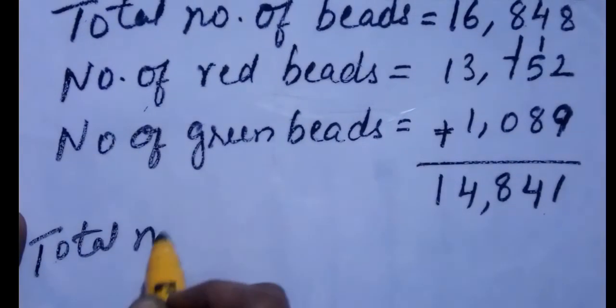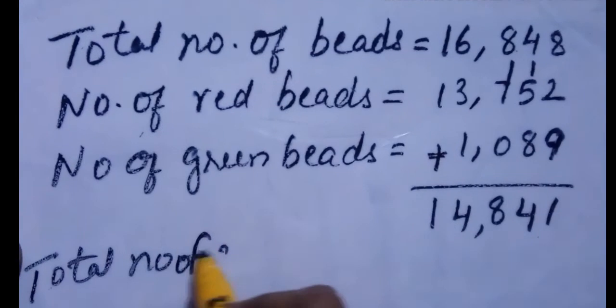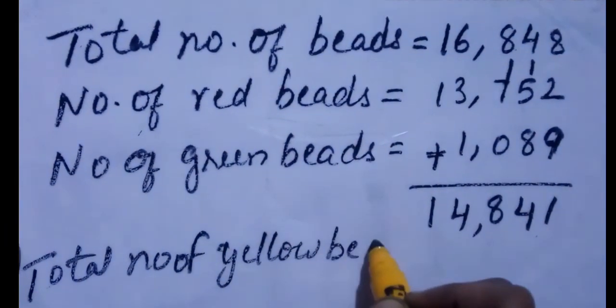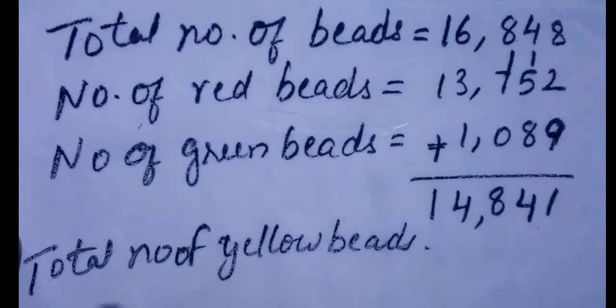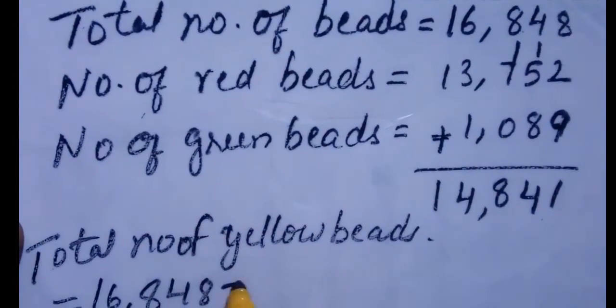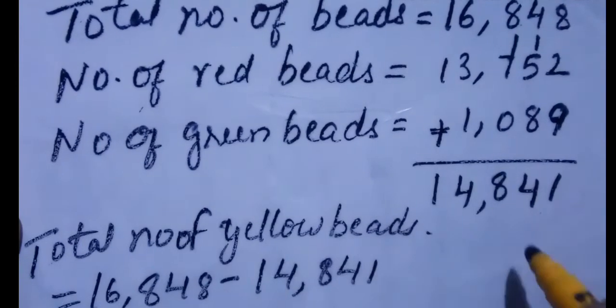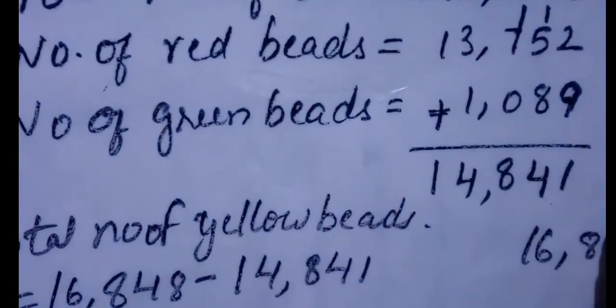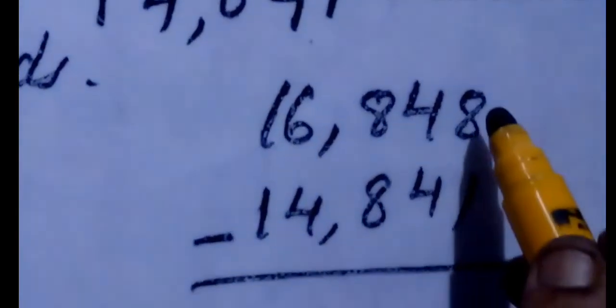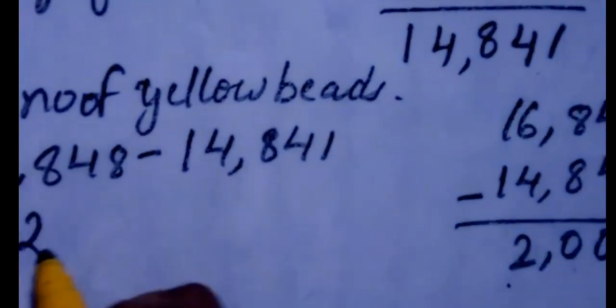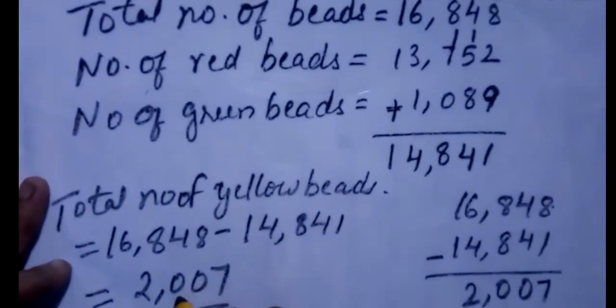Total number of yellow beads is equal to 16,848 minus 14,841. Subtracting: 8 minus 1 is 7. 4 minus 4 is 0. 8 minus 8 is 0. 6 minus 4 is 2. 1 minus 1 is 0. So you got 2,007 yellow beads.